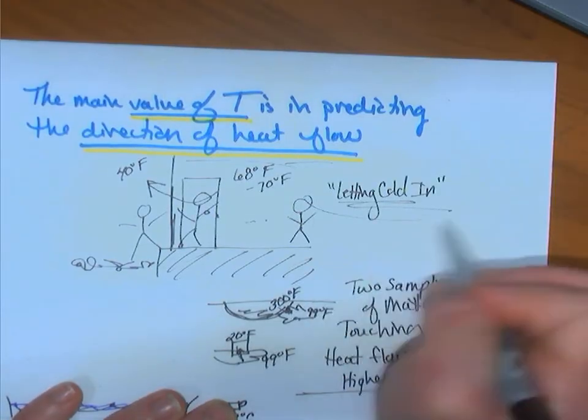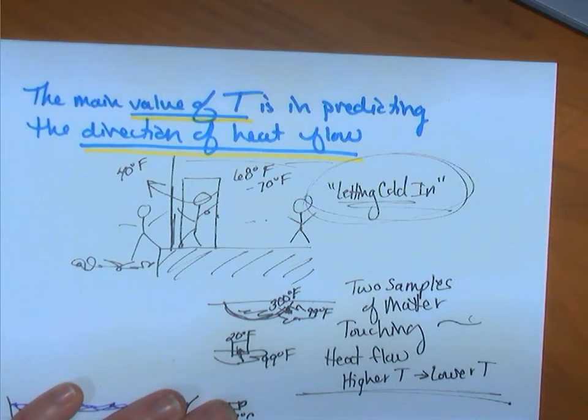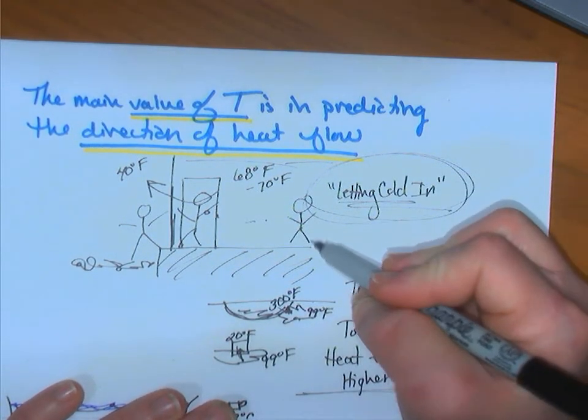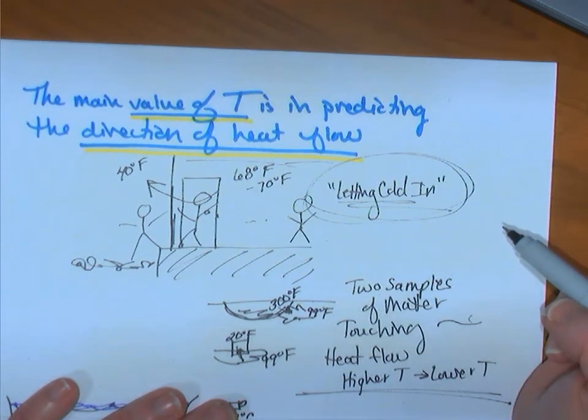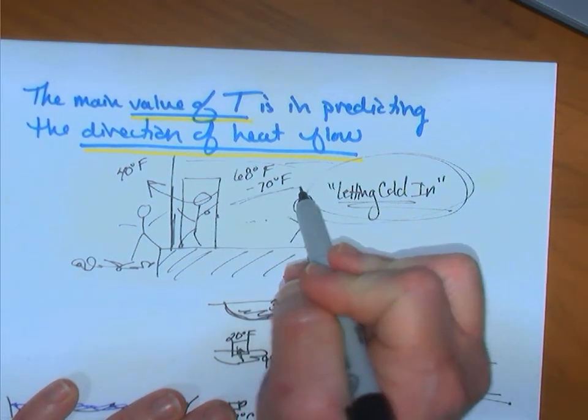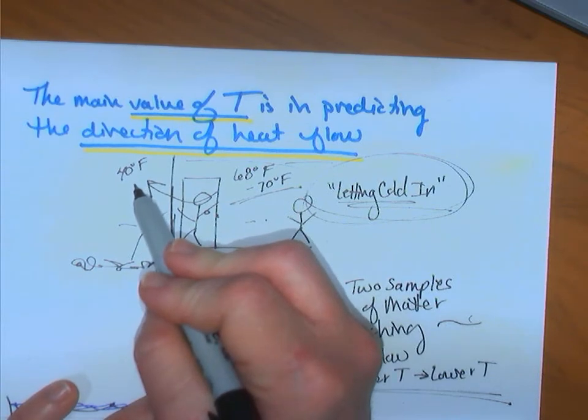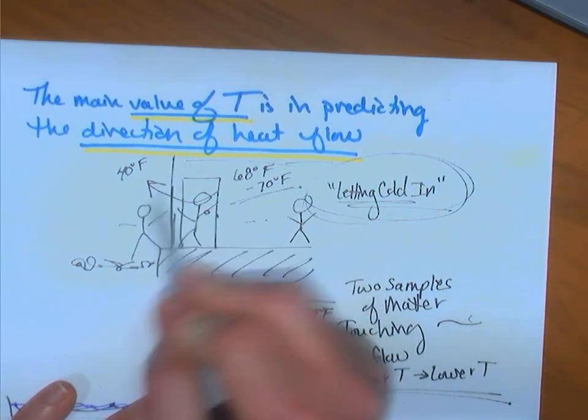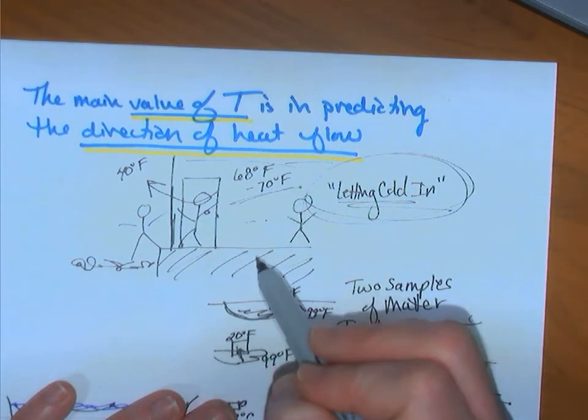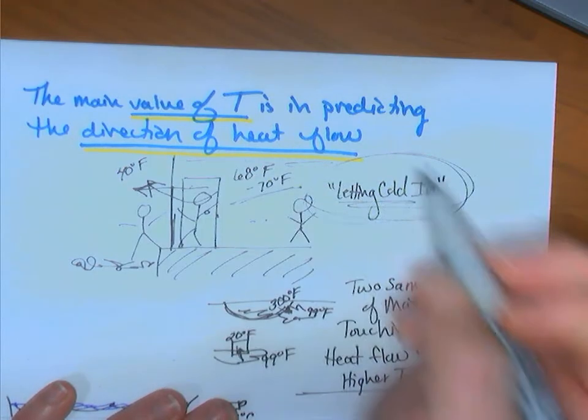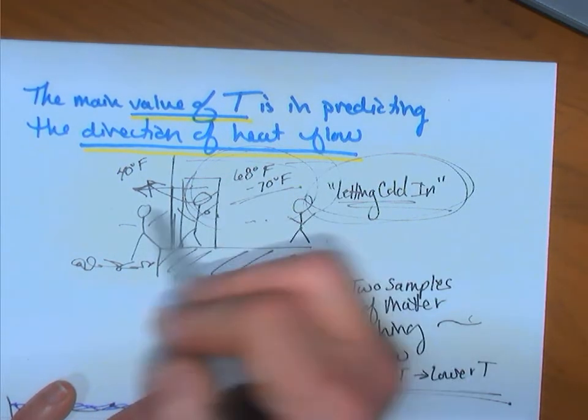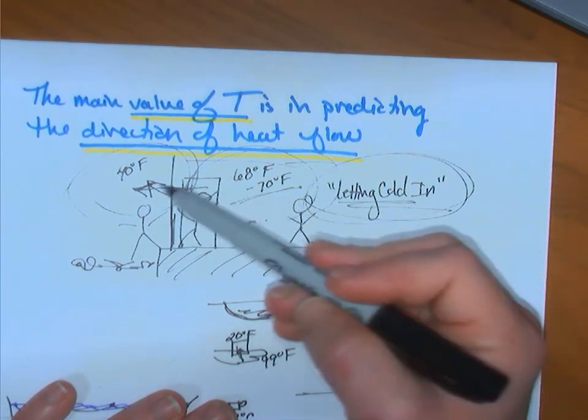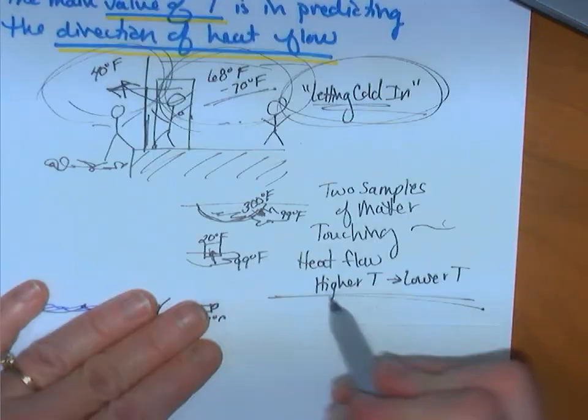So, letting the cold in, if the opportunity would present itself very respectfully, you could say, you know, Mom and Dad, we were talking about heat and temperature. And you know, the inside of our house is at a higher temperature than the outside. So, I know commonly we say, we let cold in when the outside is of a lower temperature. But actually, heat is flowing out. Because when the inside air comes into contact with the outside air, the inside air being at a higher temperature is losing heat to the outside. Heat flows from higher to lower.